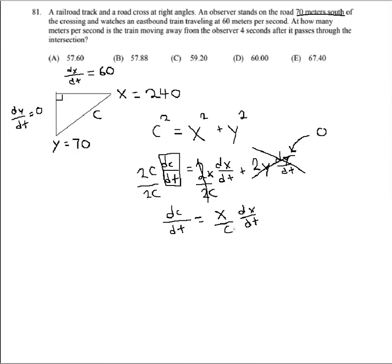And I know my values for x and dx/dt. I just need to find c, and then I can solve. So let's go ahead and do that. We do know, again, Pythagorean theorem, c squared is going to be equal to x squared plus y squared. So c is going to be equal to the square root of x squared plus y squared.